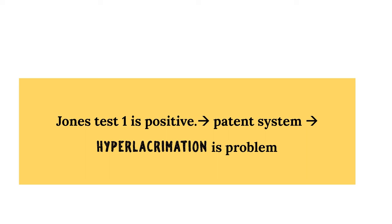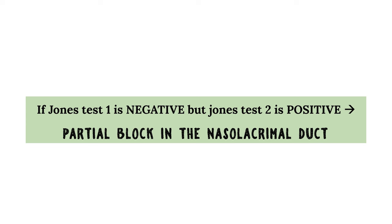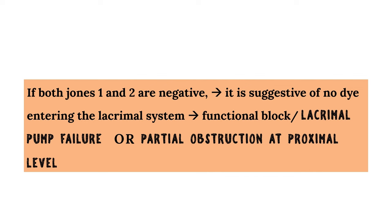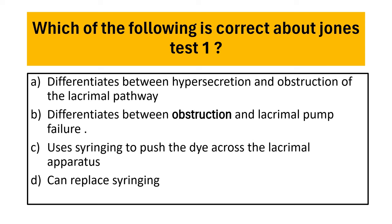To summarize: if Jones test 1 is positive, the system is patent and the problem is hyperlacrimation. If Jones test 1 is negative but Jones test 2 is positive, there is a partial block in the nasolacrimal duct system. If both Jones test 1 and Jones test 2 are negative, no dye is entering the lacrimal system, indicating a functional block — also called lacrimal pump failure — or a proximal partial obstruction in the lacrimal system. That brings us to the end of the video, with a closing question: which of the following is correct about Jones test 1?